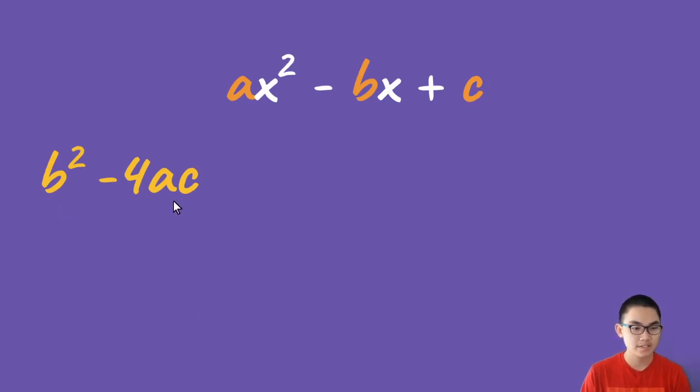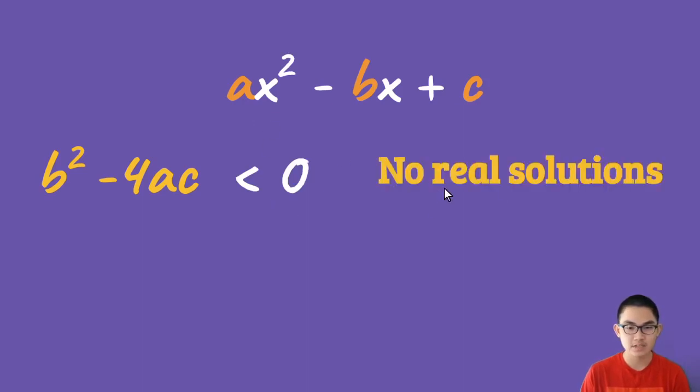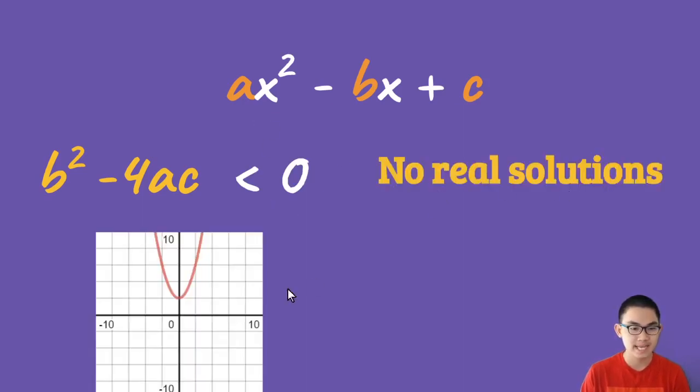And so lastly, when the discriminant is smaller than zero, it means that this function has no real solutions, meaning that it does not touch the x-axis at any point.